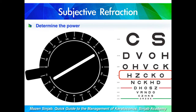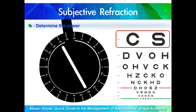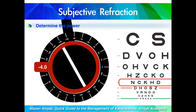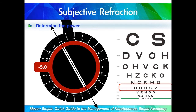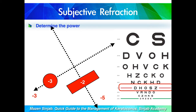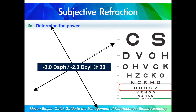Now I rotate the slit to the opposite direction — the vision will be blurred — and I start again with the lenses: minus 3, minus 4, minus 5. Above minus 5 there is no improvement, so I stop at minus 5. That meridian has a power of minus 5. To convert these two values into an equation: the patient needs minus 3 sphere, and the difference between the two meridians is minus 2, so I need minus 2 cylinder oriented at the meridian of minus 3 — which is 30 degrees. The patient has minus 3 diopter sphere, minus 2 diopter cylinder at 30.